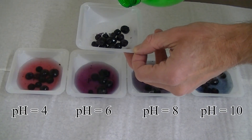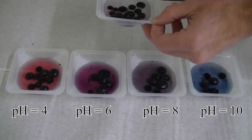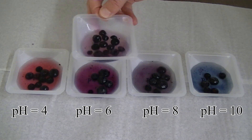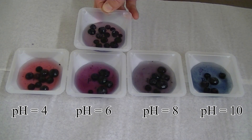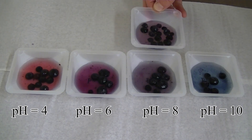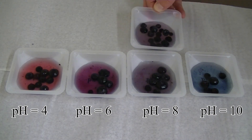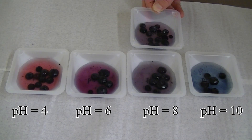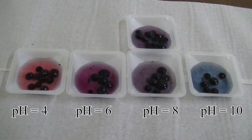Now let's see what happens when we add tap water to some blueberries. As I compare the colors, it appears the color of the blueberries in tap water most closely matches the colors of the blueberries at pH 8. But this doesn't make any sense, because we know that tap water and blueberries are lower than pH 6. So the color of blueberries in tap water must be due to something other than pH and acid-base effects.